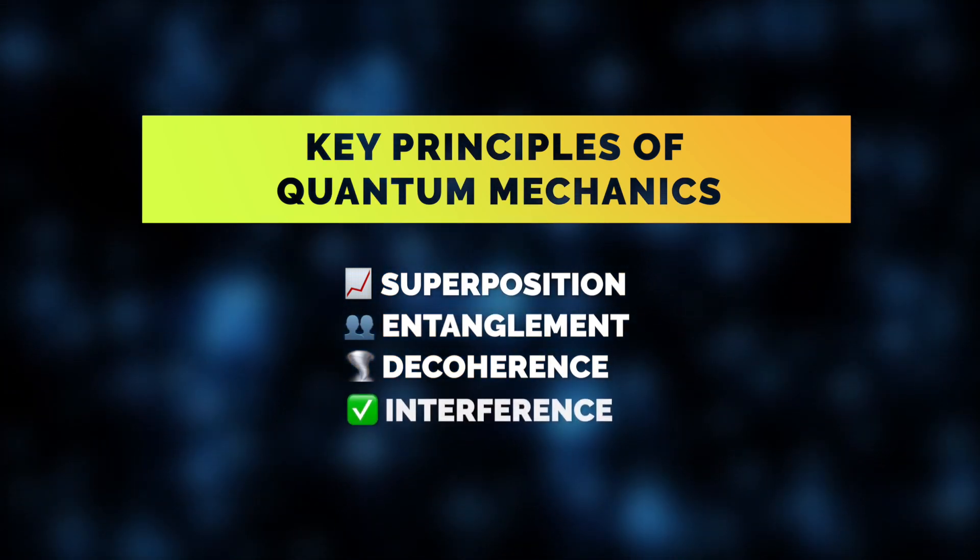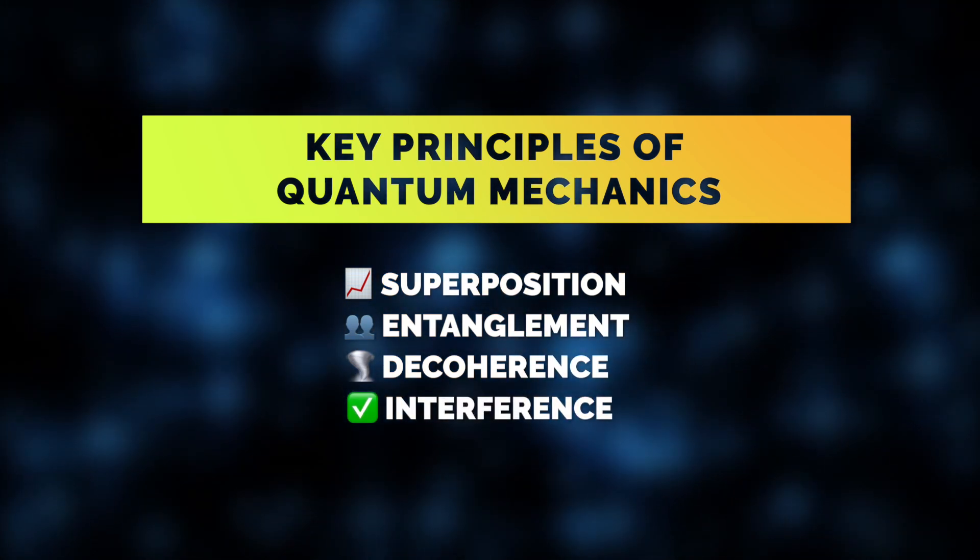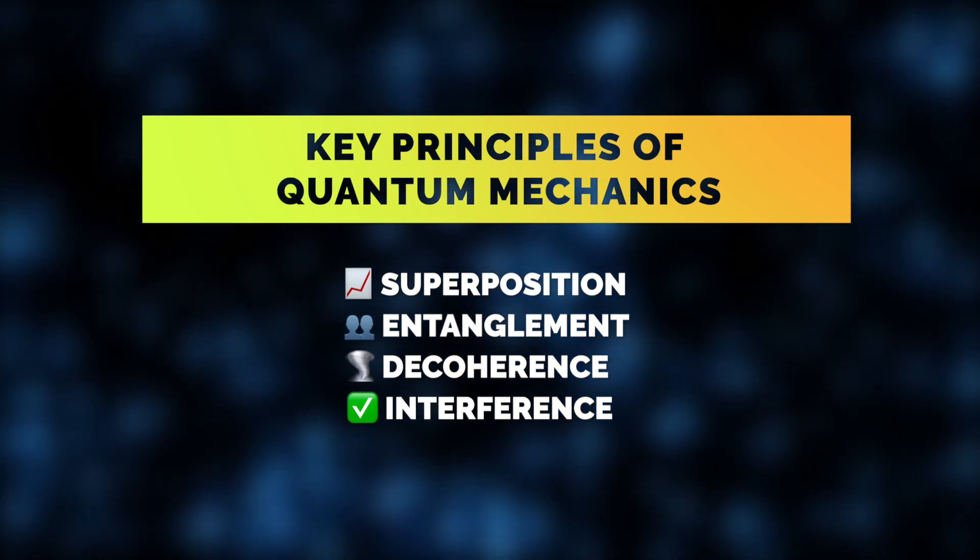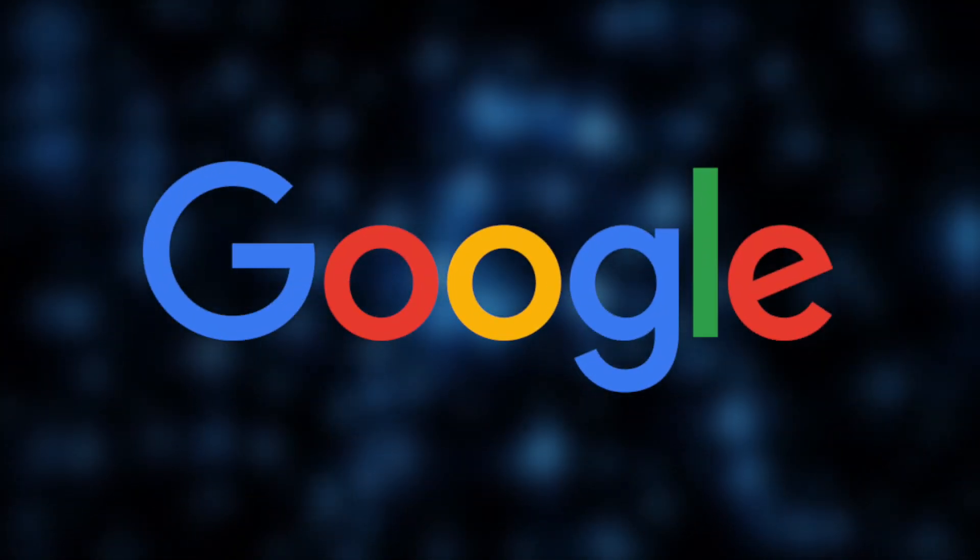Finally, interference happens when quantum states interact, creating patterns of probabilities that amplify correct results and cancel out incorrect ones. Now that we know how quantum computing works, let's return to the Google product.